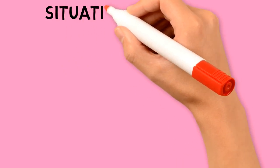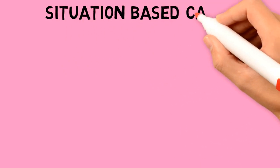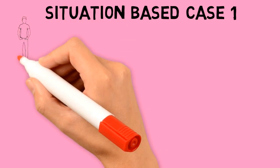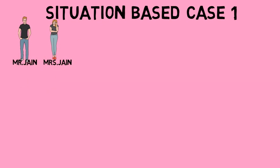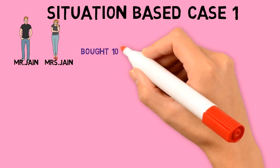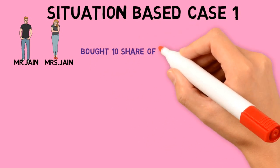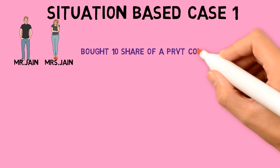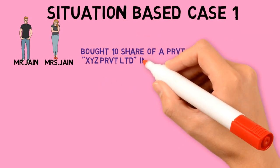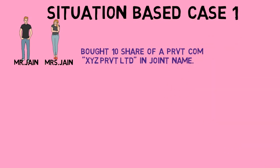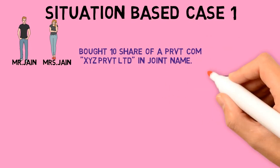Here comes a situation-based case. Number 1: for example, there are two persons, Mr. Jain and Mrs. Jain. They bought 10 shares of private company XYZ Private Limited in joint name. They received a share certificate under their joint name as Mr. Jain and Mrs. Jain, having 10 shares.